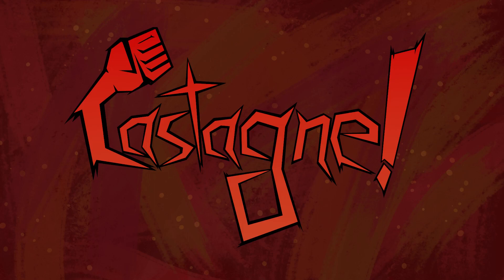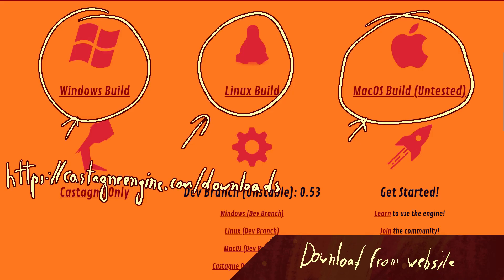Hello, welcome back to the Castagne tutorial. This time we're going to take a look at how to install it and how to keep it up to date. First of all, you're going to want to go to the website at castagneengine.com/downloads and download the latest zip for your operating system.